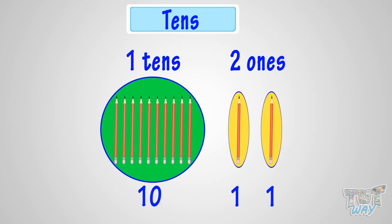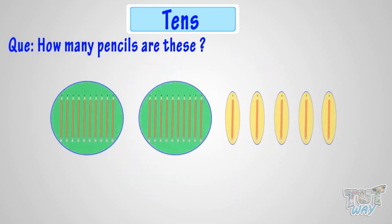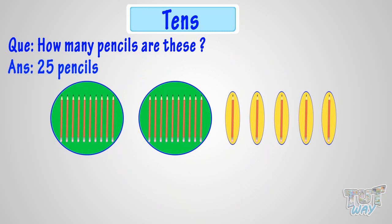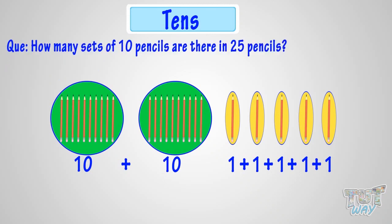Okay, let's take another example to make it more clear. Here, how many pencils are these? Yes! Twenty-five pencils! Here we have two sets of ten pencils and five sets of one pencil each. So, how many sets of ten pencils are there in twenty-five pencils?